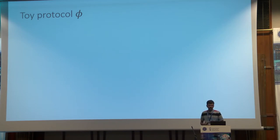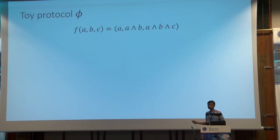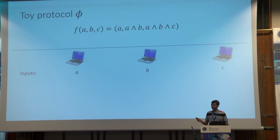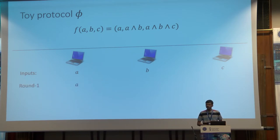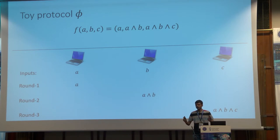This toy protocol computes a three-party functionality F that takes a bit A from the first party, bit B from the second party, bit C from the third party, and outputs three bits: A, A AND B, and A AND B AND C — and all parties get all three bits. A simple protocol that securely computes this function works as follows: in the first round the first party broadcasts A; in the second round the second party broadcasts A AND B; in the third round the third party broadcasts A AND B AND C. This is a very simple, information-theoretically secure protocol.